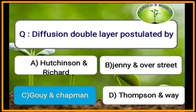Diffuse double layer is postulated by which scientists? The diffuse double layer is postulated by Gouy and Chapman.